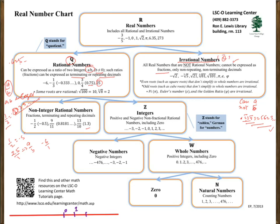Rational numbers are represented by Q, and irrational numbers are represented by Q-bar. Examples of irrational numbers are √2, -√2, cube root of 3, cube root of 5, √21, and π. All those numbers that cannot be written in the form p/q and have only non-repeating and non-terminating decimals are irrational numbers.